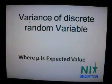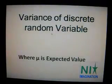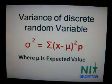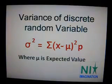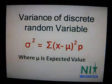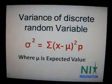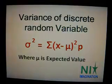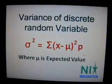What is the variance of a discrete random variable? Variance means the square of standard deviation. So the variance is the summation of (random variable minus mu) squared, multiplied by probability. Mu means expected value.